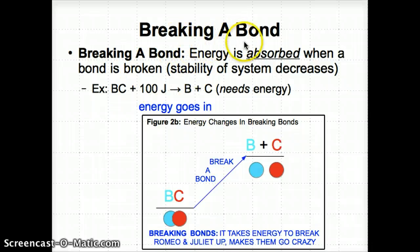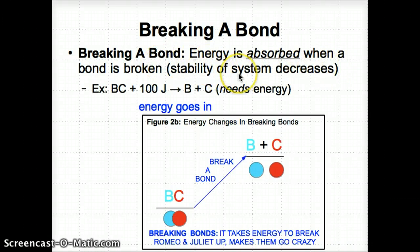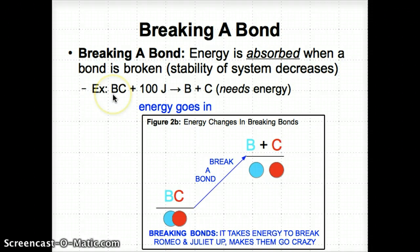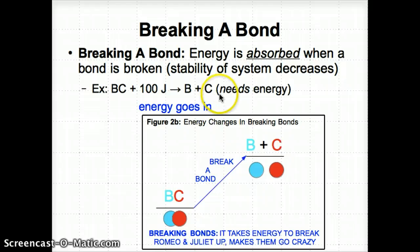Now let's consider the opposite case: breaking a bond. When a bond is broken, energy is generally absorbed, and the stability of the system decreases as the atoms break apart. An example of this is energy being put into the reactant side — the left side — with molecule BC, to break it apart into atoms B and C on the product side — the right side. The system needs energy input to break apart.